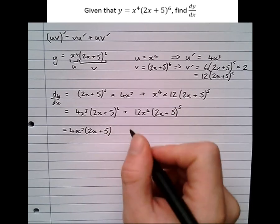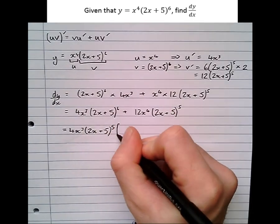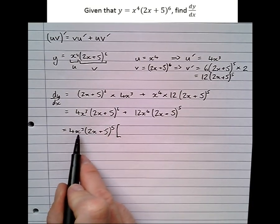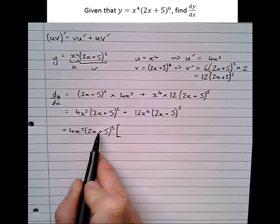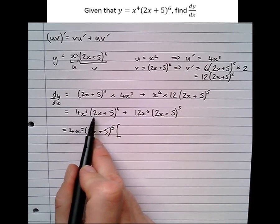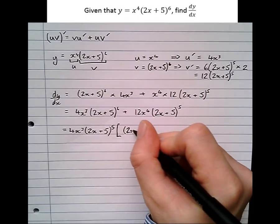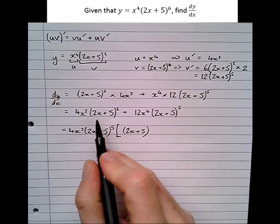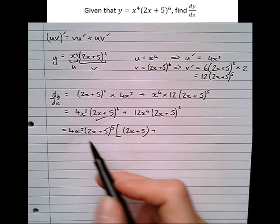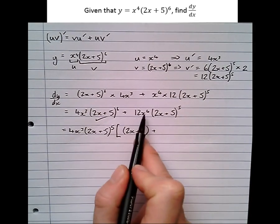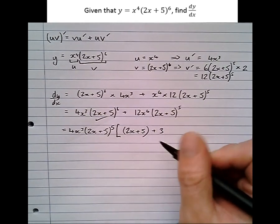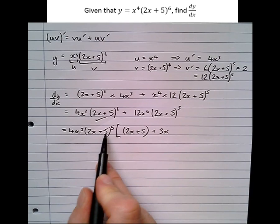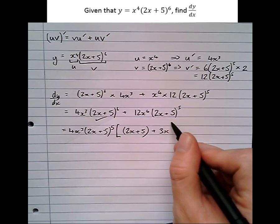The most they've got in common is 5 of those (2x plus 5) factors. So our common factor is 4x cubed times (2x plus 5) to the power of 5. To get from that back to the first term, 4x cubed times (2x plus 5) to the 6, we multiply by (2x plus 5). For the second term, to get from 4 to 12 we times by 3, and to get from x cubed to x to the 4 we multiply by x, and we already have (2x plus 5) to the power of 5.